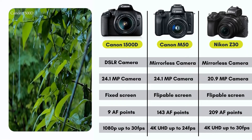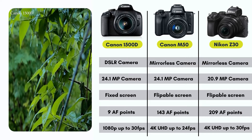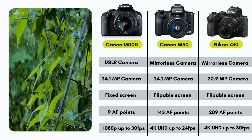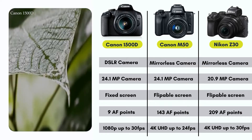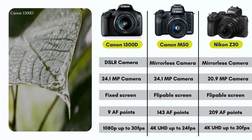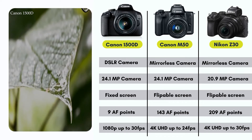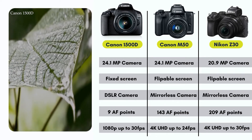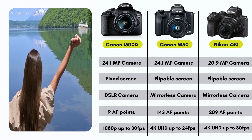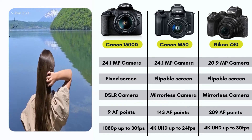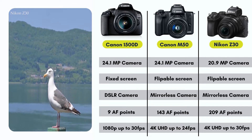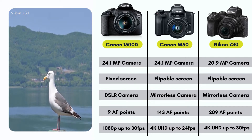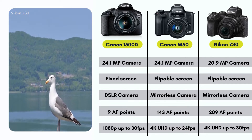Currently, we are running three models in this category: the Canon 1500D, Canon M50 and Nikon Z30, which are mirrorless cameras. The Canon 1500D is a DSLR camera whereas both the Canon M50 and Nikon Z30 are mirrorless cameras.